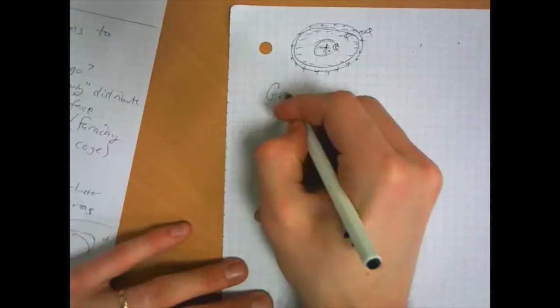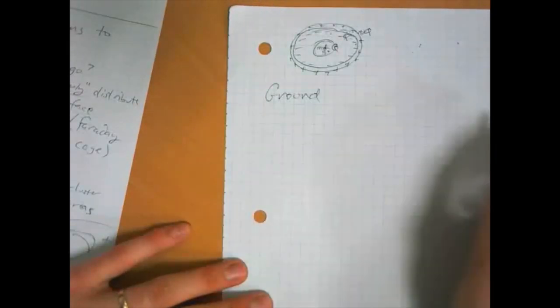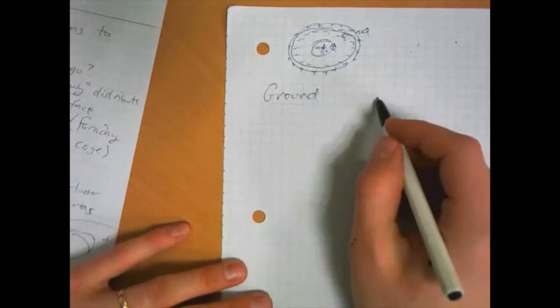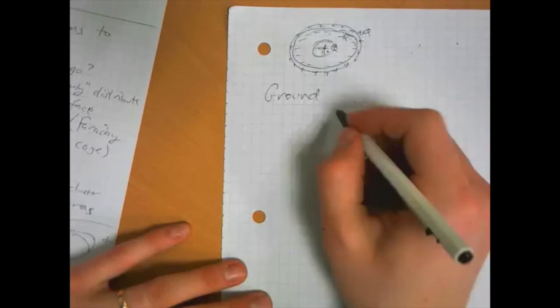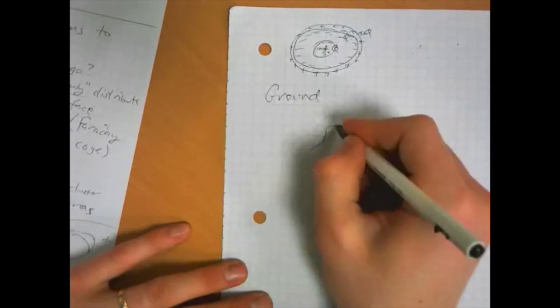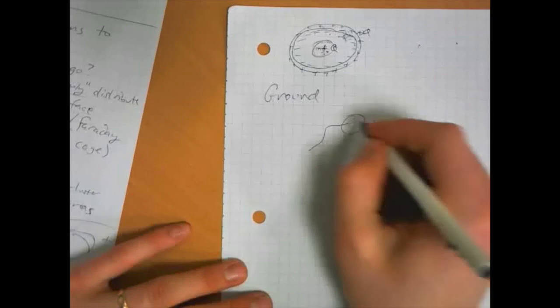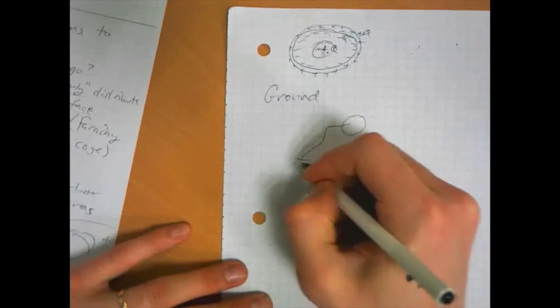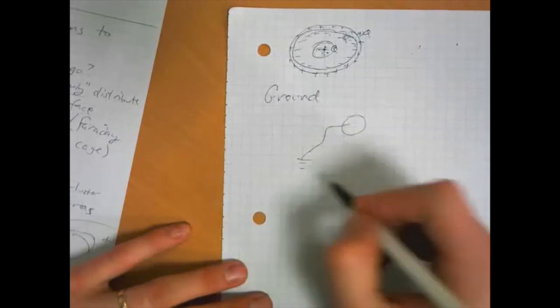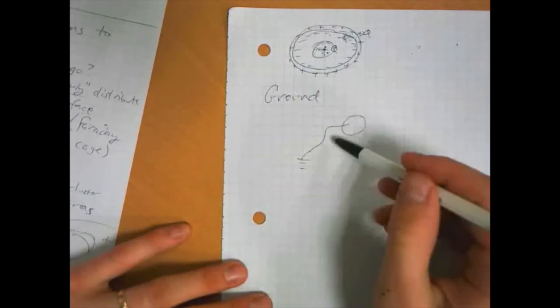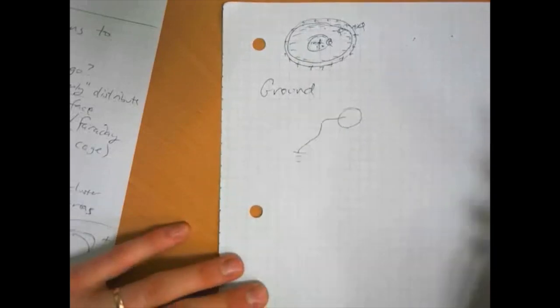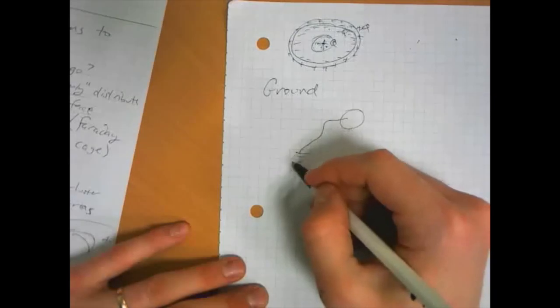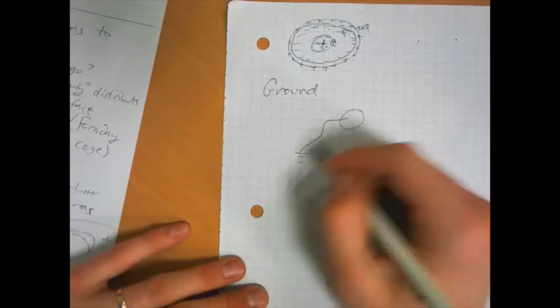One other important concept is the concept of a ground. And the ground is just a place where electrons are free to flow to and from. And it's called the ground because you just kind of bury the wire in the earth, and then you've got your conductor or whatever. The earth has a bunch of electrons floating around. And so if you're attached to the ground, electrons can flow freely in and flow freely back out, depending on what's going on in the sphere.